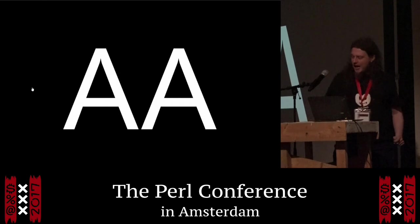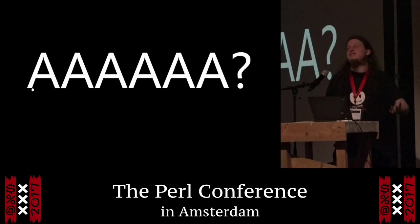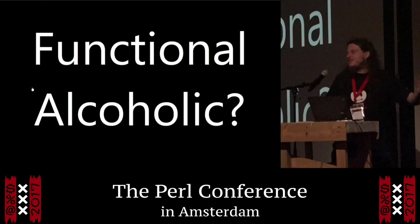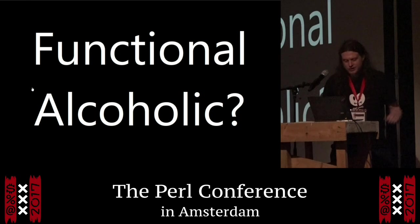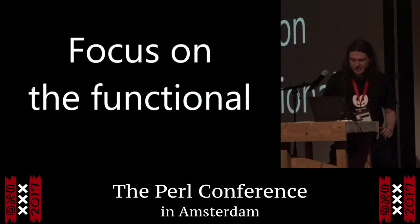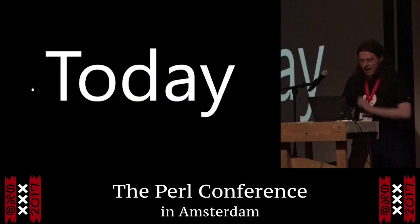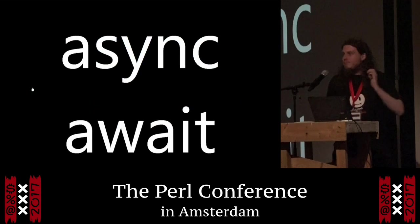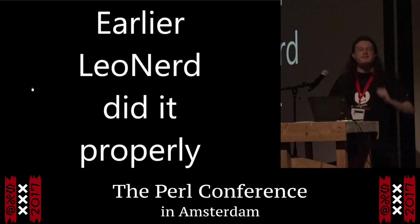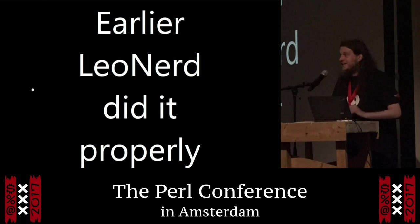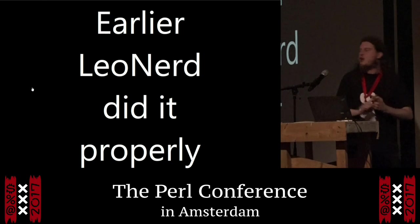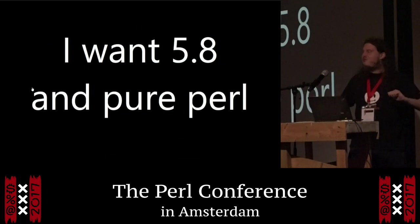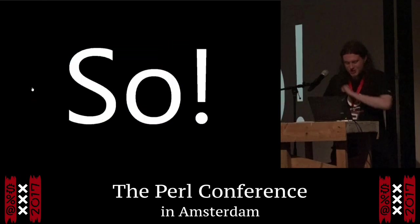This talk is called AA — async and await, not Alcoholics Anonymous. If you're going to be a functional alcoholic, focus on the functional — it's an excellent style of programming. Today we're talking about async programming and more specifically async/await. Paul Evans already showed you how to do it properly. But I don't do access code or sanity — he needs Perl 5.24 and XS. I want 5.8 and pure Perl so I can fat-pack things.